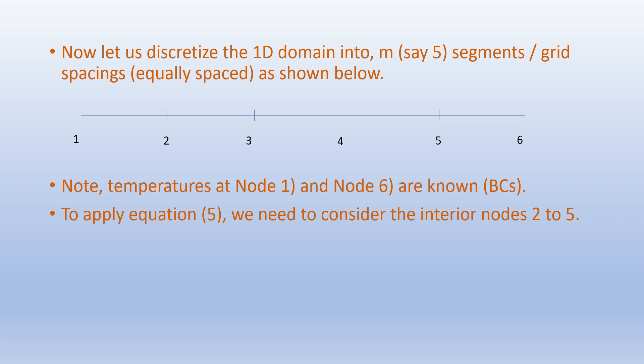We discretize the 1D domain into m equals 5 segments or grid spacings, equally spaced, with nodes numbered 1 to 6. We know the temperatures at nodes 1 and 6 as boundary conditions, and the initial temperatures at interior nodes 2, 3, 4, and 5 as initial conditions. To apply the FTCS equation we consider the interior nodes from 2 to 5.